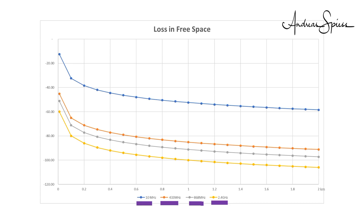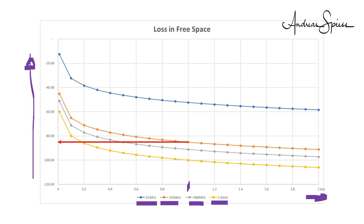On the x-axis we see the distance, and on the y-axis the power lost in space. Let us assume we have a 433 MHz transmitter with enough power to bridge one kilometer. If the same transmitter would use 868 MHz, it would only be able to bridge half a kilometer. And on 2.4 GHz, only 200 meters. Quite dramatic. On 10 MHz, by the way, the same transmitter would be able to span a distance of 43 kilometers.